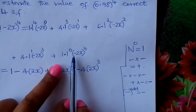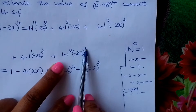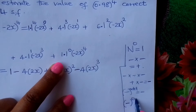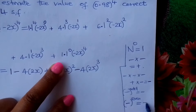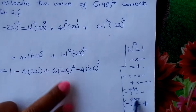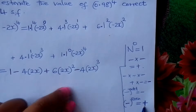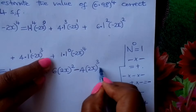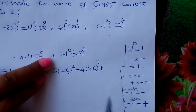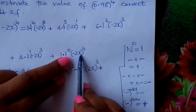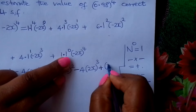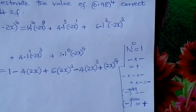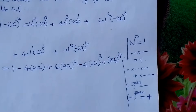Then we come to the fifth term. Negative raised to power 4 is an even power, and negative raised to an even power gives us a positive. So positive followed by positive — the whole term is positive. We have plus (2x) raised to 4.